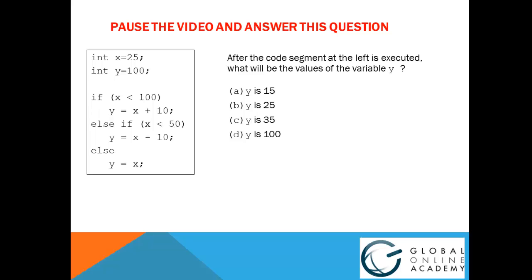Welcome back. The correct answer is C. Y is 35. Y starts out with a value of 100, but since X is less than 100, we reset it to X plus 10, or 35, right after that first if statement. Note that we will not even check to see if X is less than 50 in the else if statement. Once we've executed the if portion, we do not also execute the else portion.